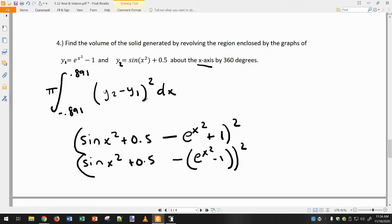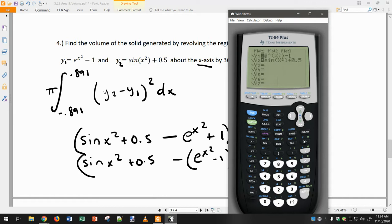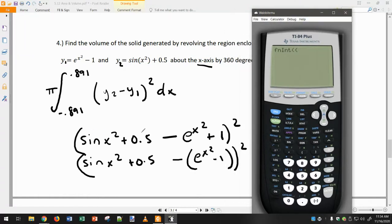The hardest part is really typing it into the calculator, so be very careful. I'm going to start with parentheses. So sine x squared, close those parentheses, plus 0.5, minus, minus e to the x squared, close that parentheses, and then plus one, and then close and then square. Now I have to put comma, respect to x, and then I have to put the boundaries: negative point eight nine one to positive point eight nine one. And then I'm going to do the pi after this, so times pi.